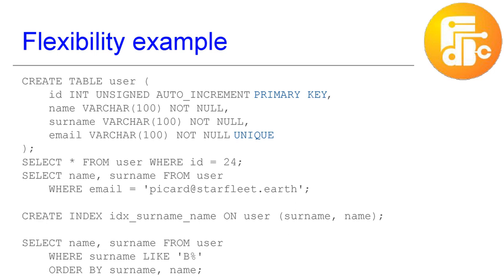Here is an example of this kind of flexibility. We have a user table and a couple of queries to extract data — first by ID, which is the primary key, so that first query is fast. The second query accesses the table by email, so it is not fast. What we do is simply create a secondary index — you can see the CREATE INDEX statement — and after that, we will be able to run the query we need.